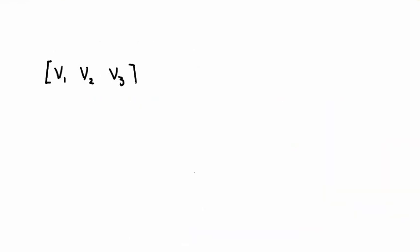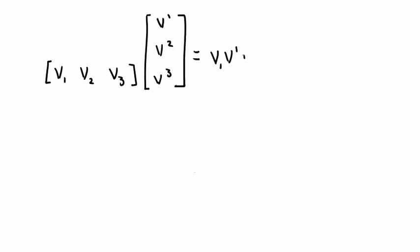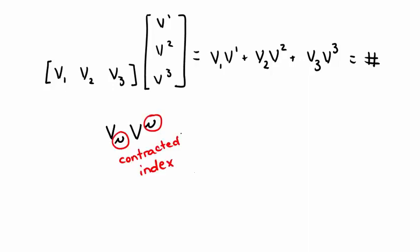Using a matrix representation, we can create a scalar quantity from a vector by multiplying that vector by a row vector, as I've done here. Matrix multiplication yields a number, which won't change no matter how we transform the coordinate system. Alternatively, we can use index notation to rewrite the same operation as v lower mu times v upper mu. Notice that all the indices are contracted, yielding a scalar.